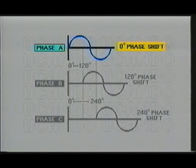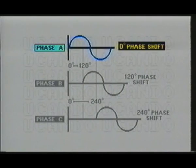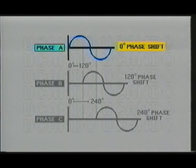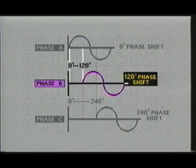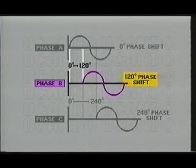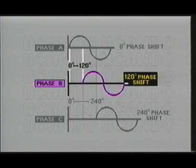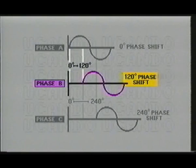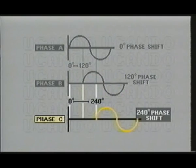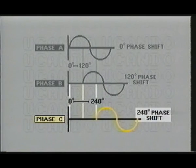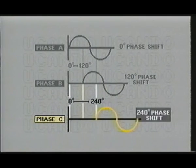Notice that phase A starts at the zero-degree point and completes its cycle at 360 degrees. Phase B starts 120 degrees from the phase A sine wave and completes its cycle at 480 degrees. Phase C, on the other hand, starts 240 degrees from phase A and completes its cycle 600 degrees from the start of phase A.